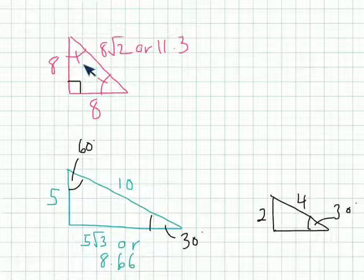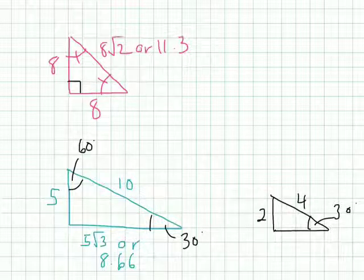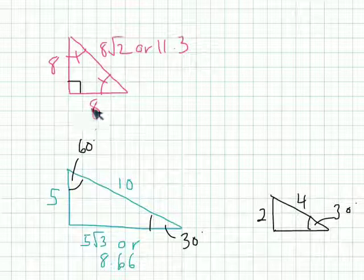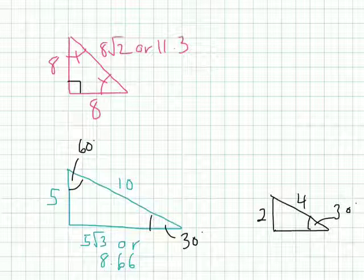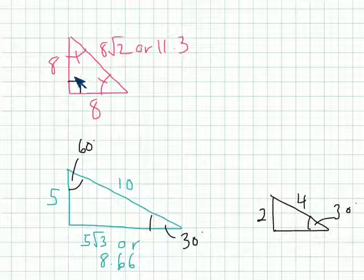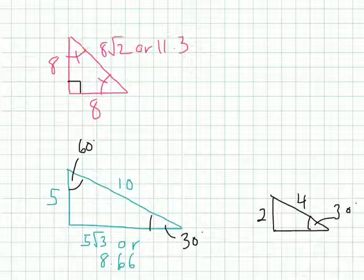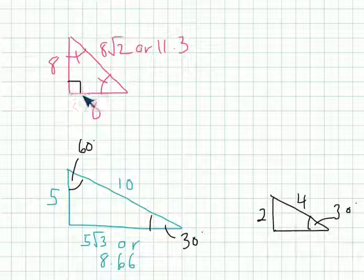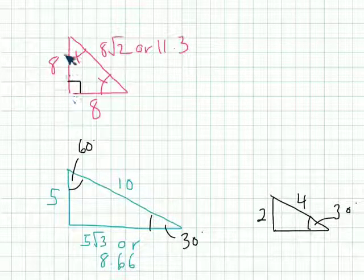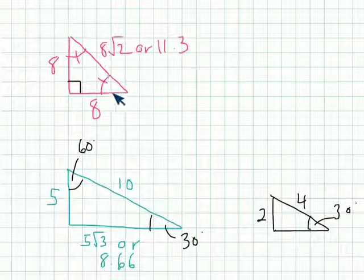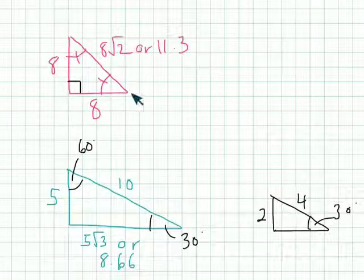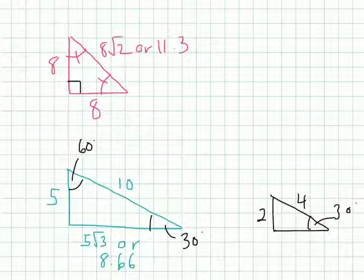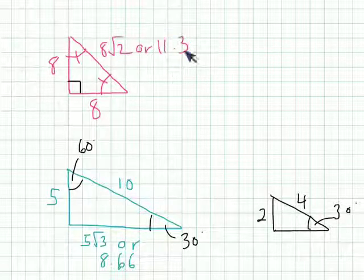When we were looking at 45-45-90 triangles, we noticed that this being 45 degrees, if the length of this leg was 8, because this is 45, this leg would also be 8. Now 90 is a much bigger degree than the 45-degree angle. And 90 degrees means this is how wide this is opening up. So because it's opening up more than 45 degrees, the hypotenuse is going to be longer because it's opening up bigger. And so the length of the hypotenuse would be 8 root 2 or 11.3.